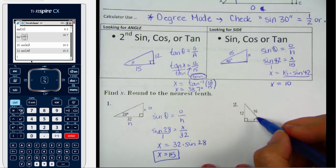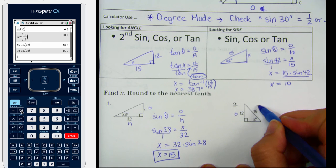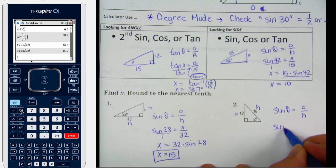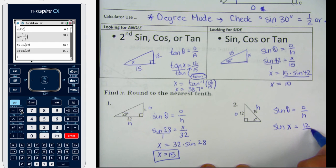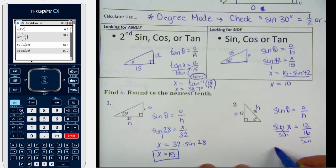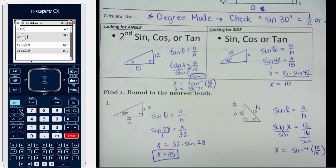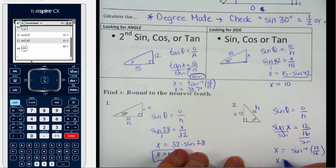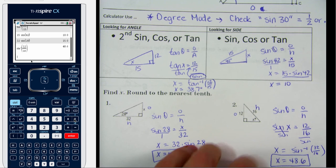In the second example, I'm looking for an angle. The opposite side is 12 and the hypotenuse is 16, so again I use sine. Plugging in: sine of x equals 12 over 16. To solve for x, I divide by sine, giving x equals sine inverse of 12 over 16. Typing sine inverse of 12 over 16 into the calculator gives 48.6, so that angle is 48.6 degrees.